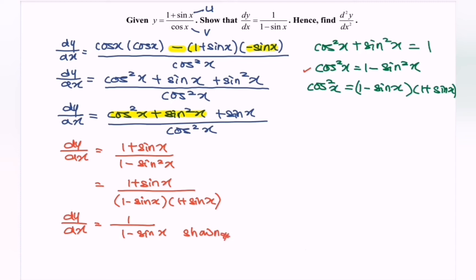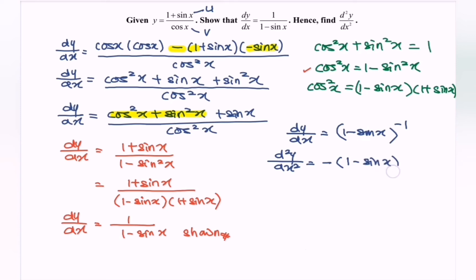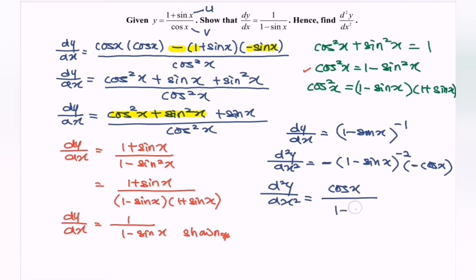Hence, find the second derivative. We have the first derivative dy/dx = 1 / (1 − sin x). My suggestion is to rewrite this as (1 − sin x) to the power of negative 1, then differentiate. The second derivative equals negative (1 − sin x) to the power of negative 2, multiplied by the derivative of the inner function. Differentiating 1 gives 0, and differentiating sin x gives negative cos x. Rewriting, the second derivative equals cos x / (1 − sin x) squared.